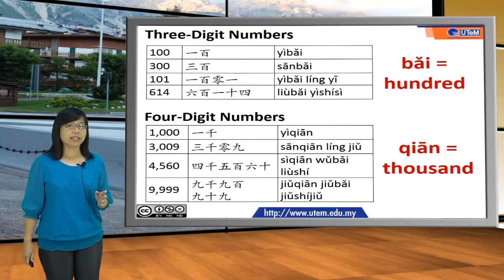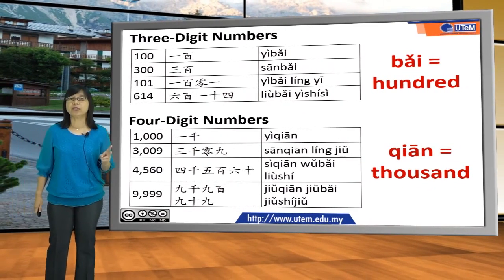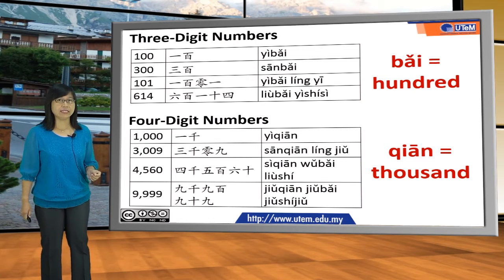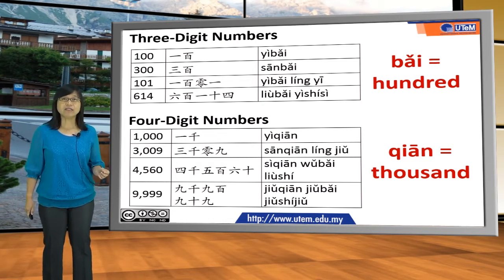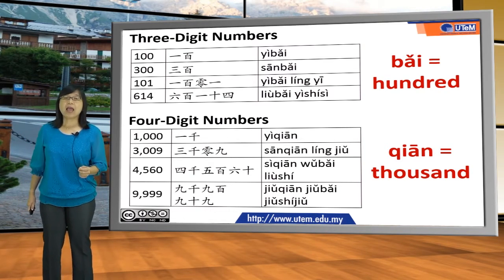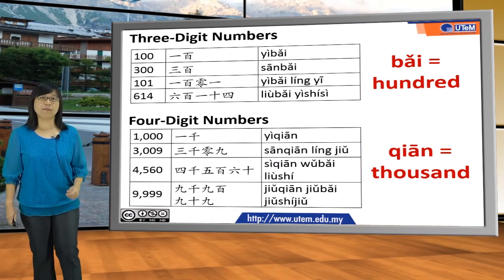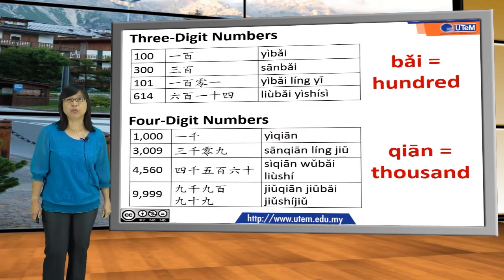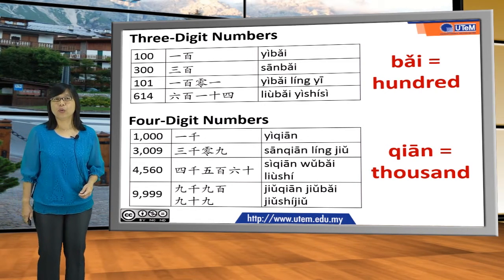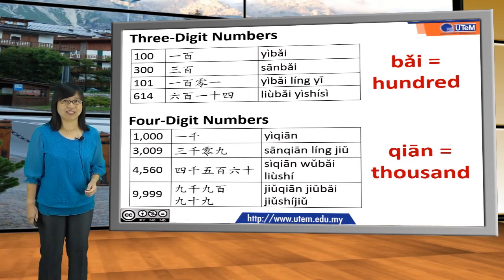Please note that if you see zeros between two numbers, you have to add 零 in order to say the whole number. For example, one hundred and one is 一百零一, and three thousand and nine is 三千零九. Also, when the number one appears between two numbers, such as 六百一十四, we must say 六百一十四, not 六百十四.